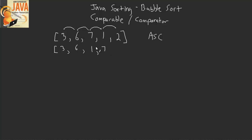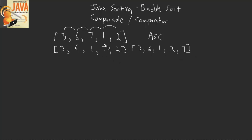So it goes ahead and swaps one and seven. You can see how those flipped around, and it leaves two alone. Then, since it just swapped those two, it moves to the next index and checks: is seven less than two? No, so we need to swap. So then it swaps two and seven. So after this first iteration we performed two swaps — we swapped seven and one, and we swapped two and seven.